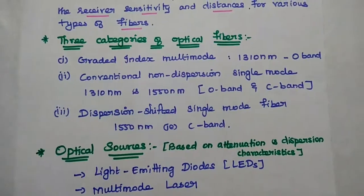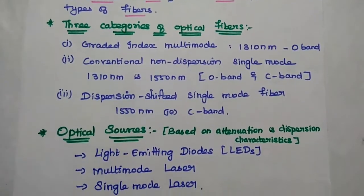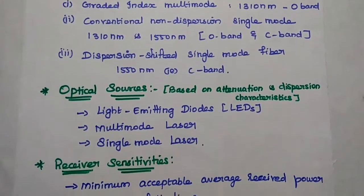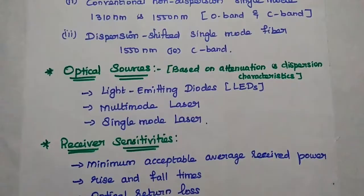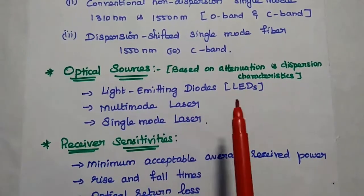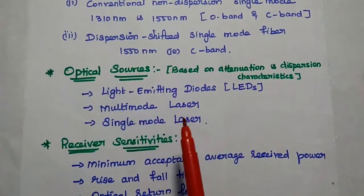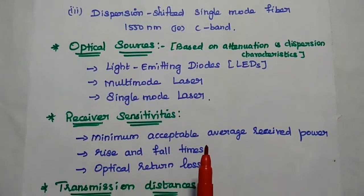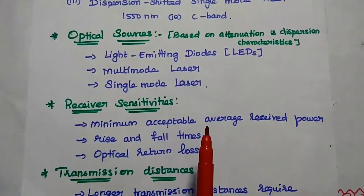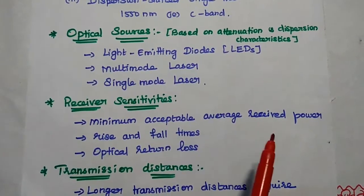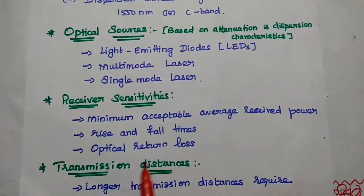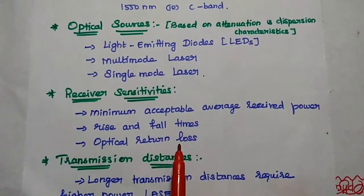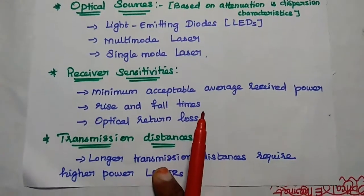For optical sources, selection is based on attenuation and dispersion characteristics. Options include light emitting diodes (LED), multi-mode laser, and single-mode laser. Receiver sensitivity considerations include minimum acceptable average received power, rise and fall times, and optical return loss for interfacing with the SONET network.